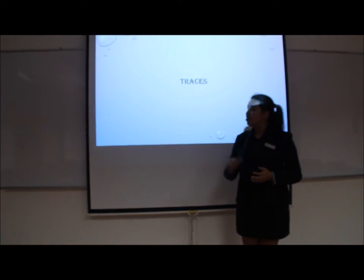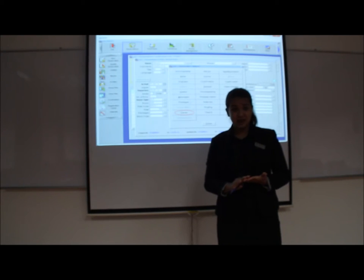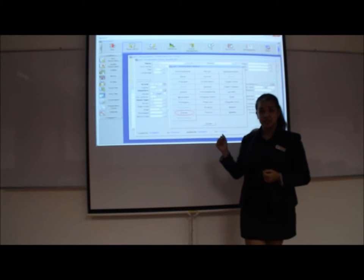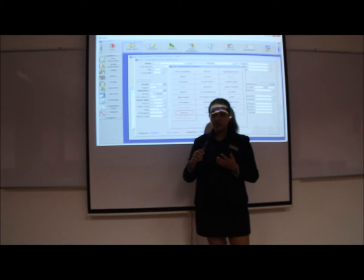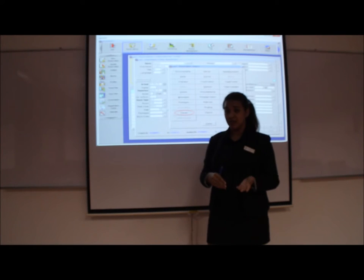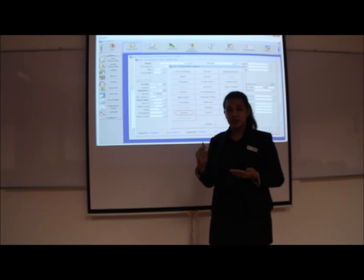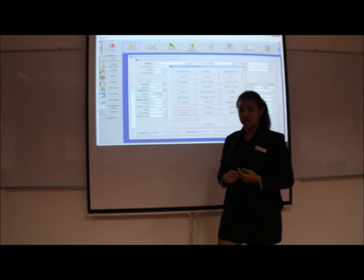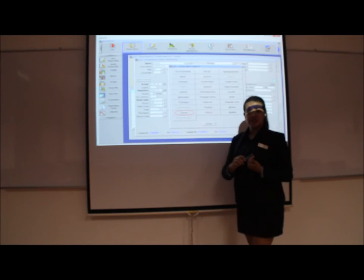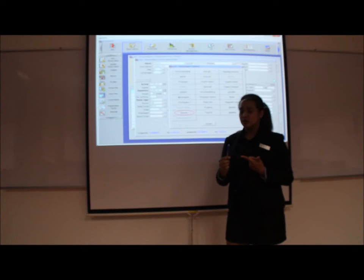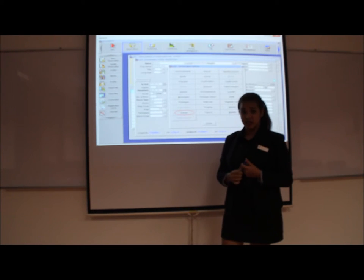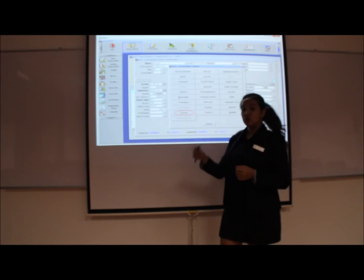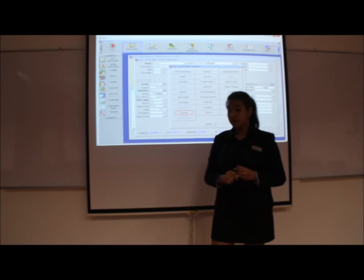Next will be traces. Traces means you notify only each specific department, as opposed to alert which goes to all departments. For example, if a guest wants a complimentary late check-out, only the particular departments that need to know — like housekeeping and front office — should be informed. Concierge doesn't need to know. So traces go only to selected departments.